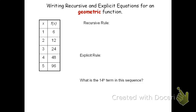In this case, I notice that to go from 6 to 12, I'm multiplying by 2. To go from 12 to 24, I'm also multiplying by 2, times 2 and times 2. I see that we have a constant ratio or a constant factor of 2 for this table.